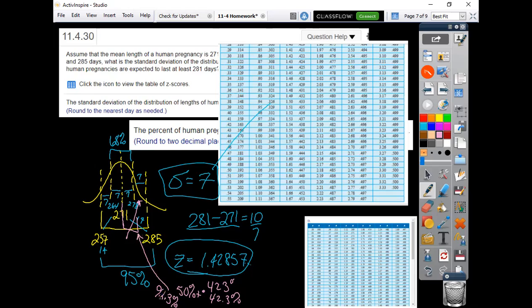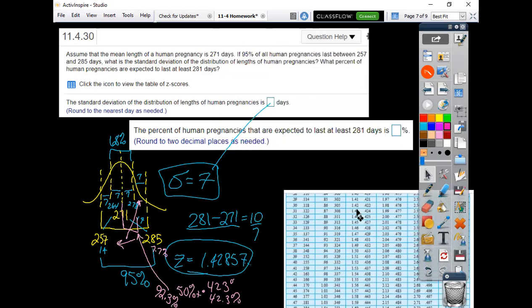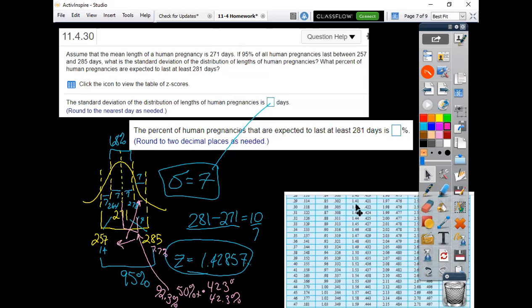So there'd be 7.7% above here, and this percent is what's below. The question asked - always important to make sure you answer the question they asked - they're going to last at least 281 days. So that much and below would be at least, and then the amount that's above. Is 290 at least 281? Yes. Is 270 at least 281? No.